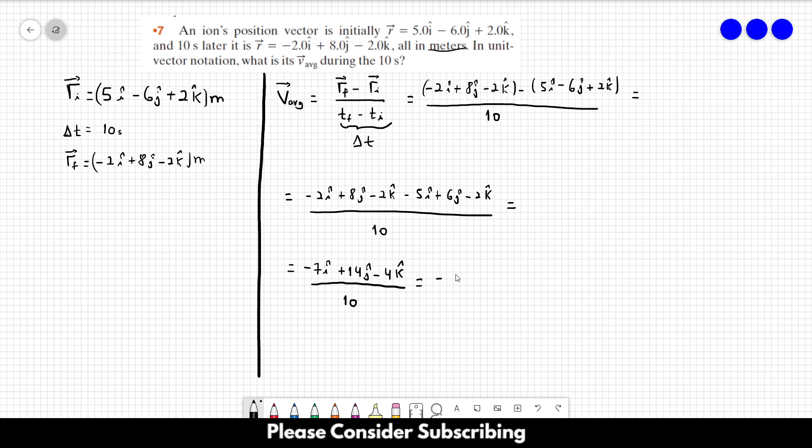And this is minus 0.7 in the i-direction plus 1.4 in the j-direction minus 0.4 in the k-direction and everything is in meters per second. And this is the answer of number 7.